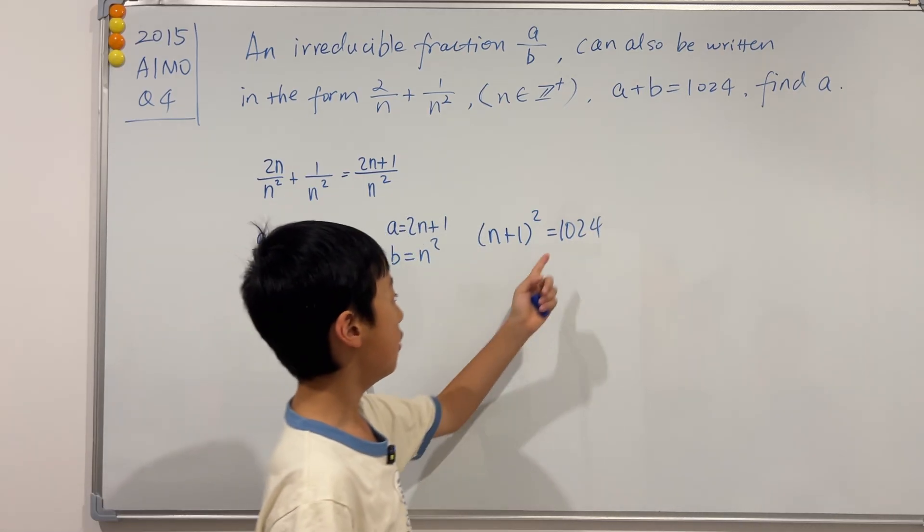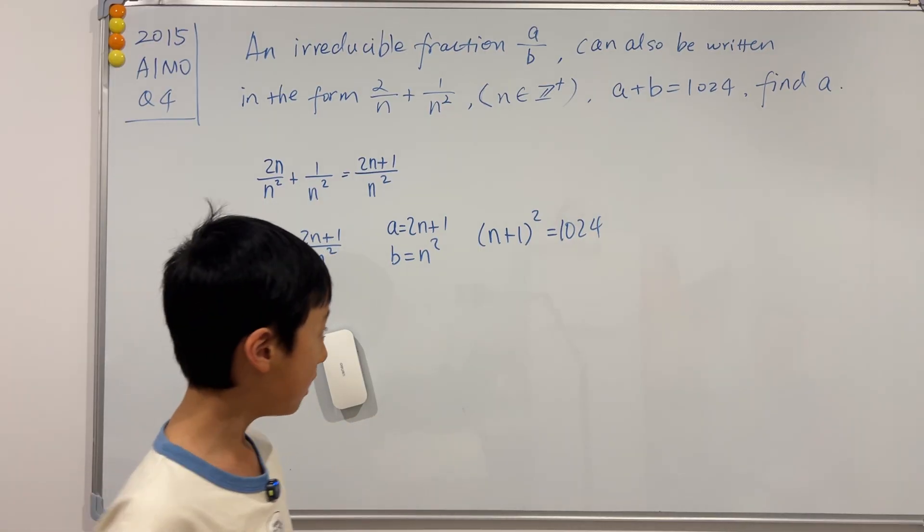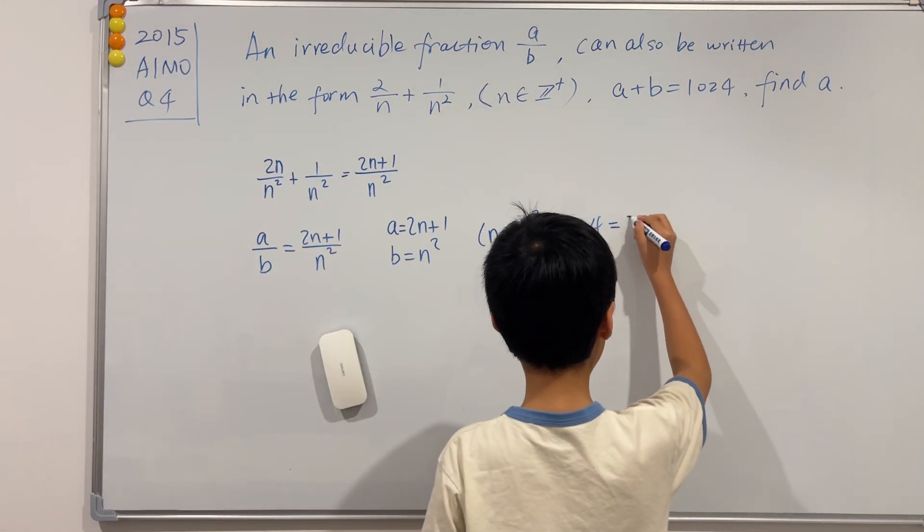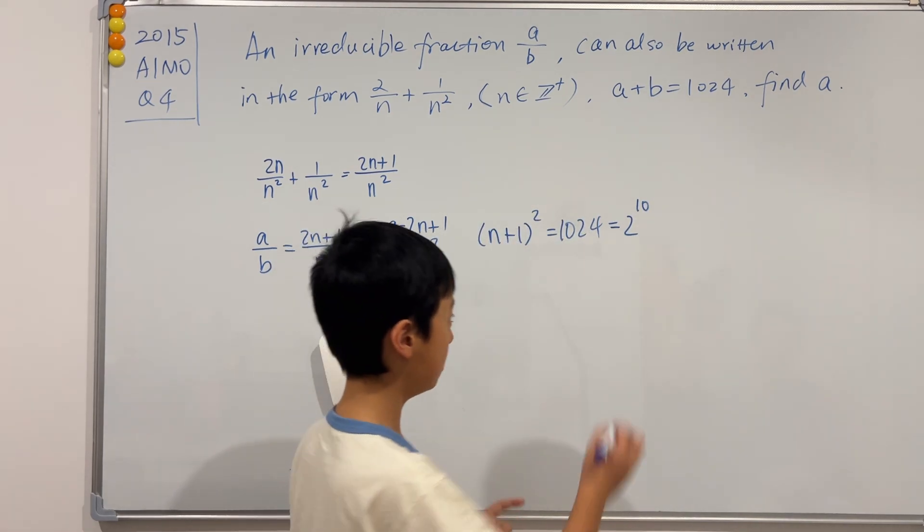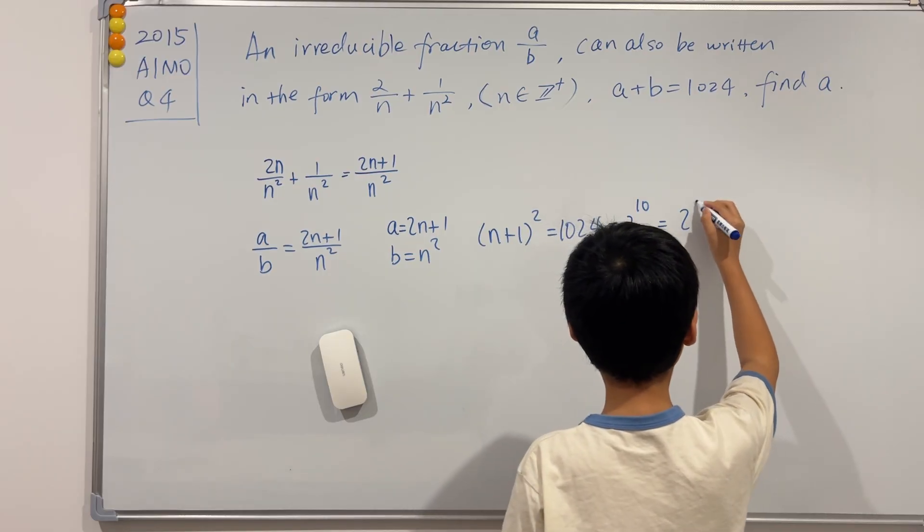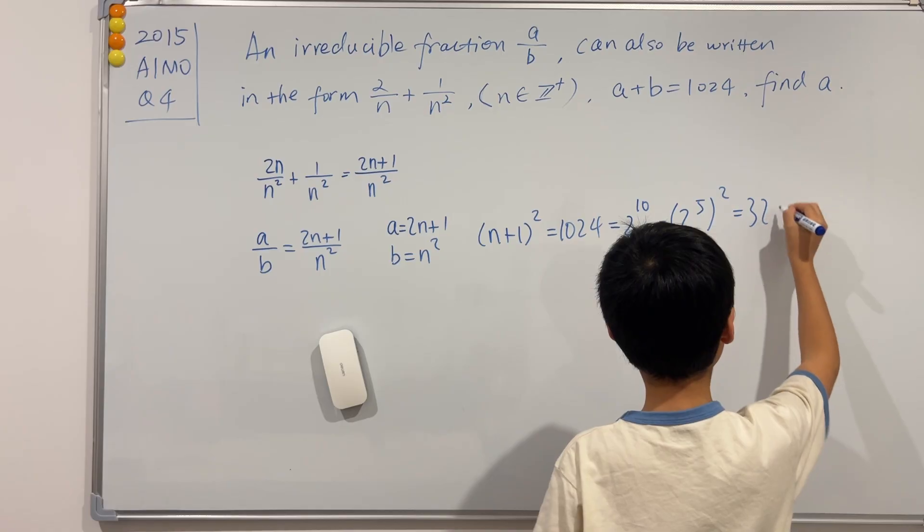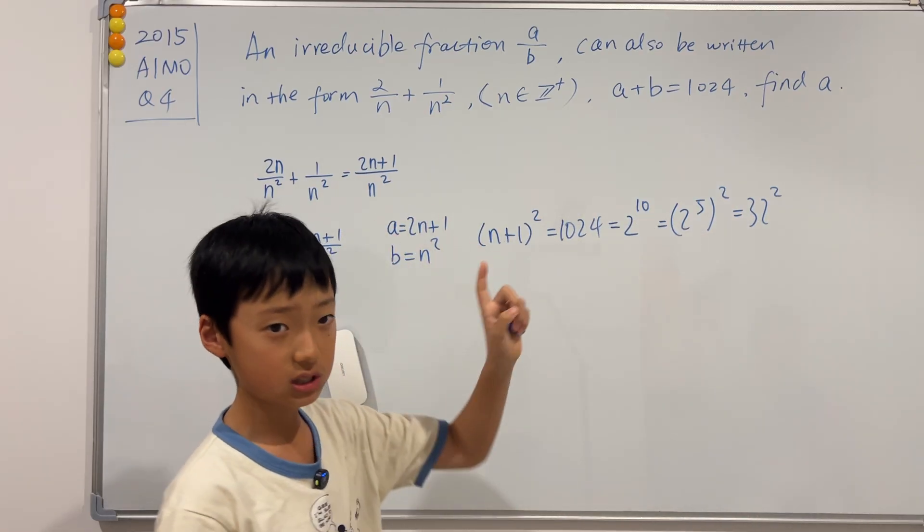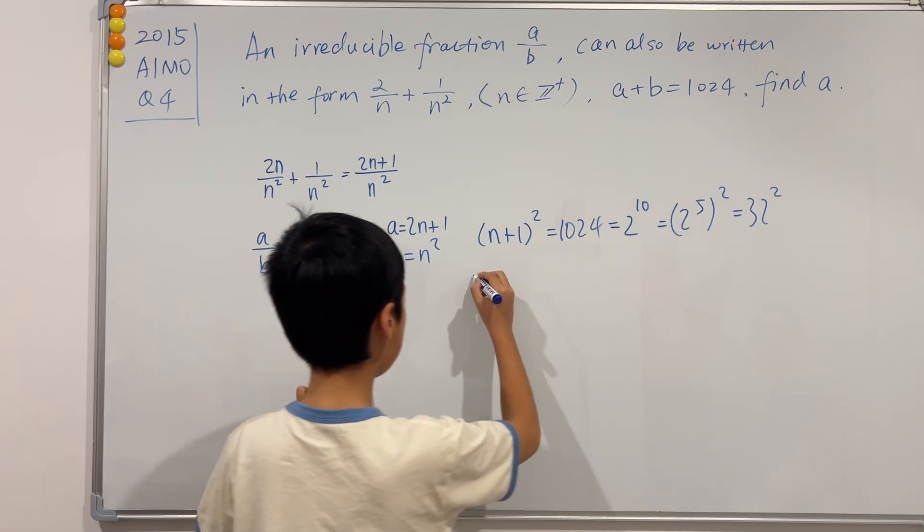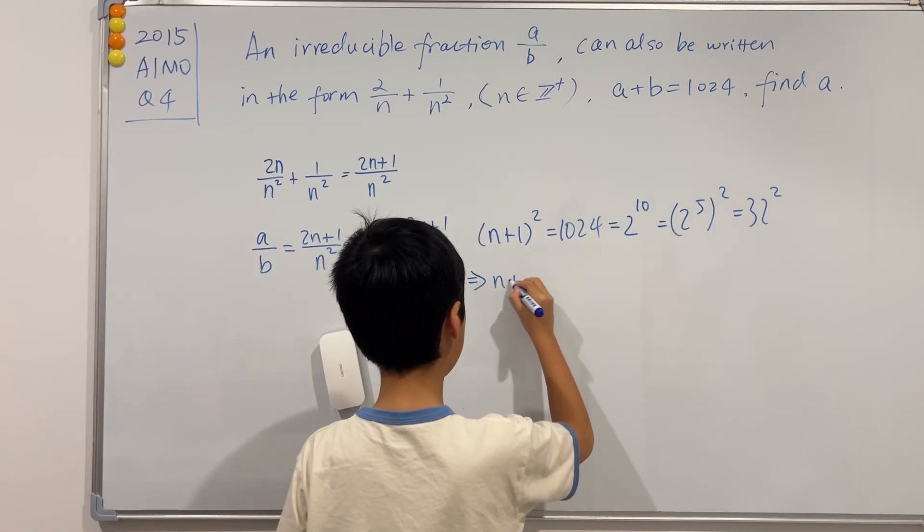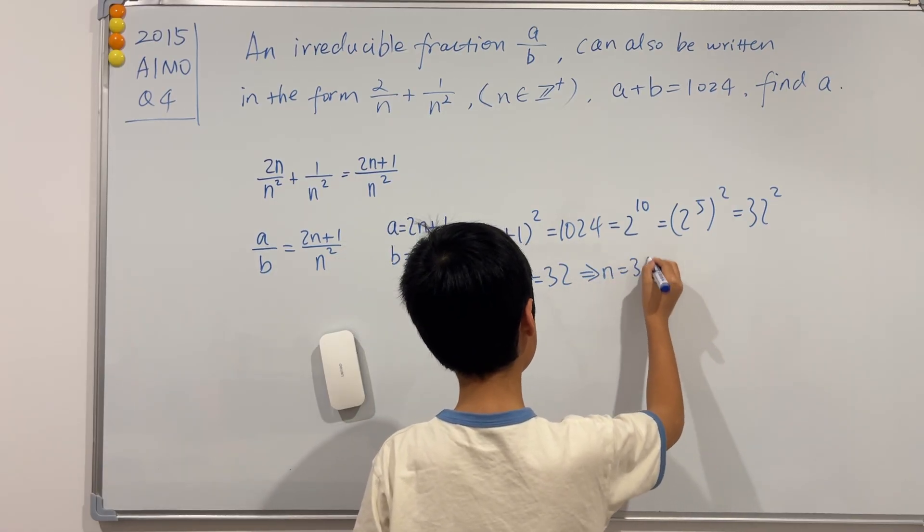If you try this on your own, 1024 is actually a really good number because it is exactly 2 to the 10th power. We can write 2 to the 10th power as 2 to the 5th power squared, so this is just 32 squared. Since N is a positive integer, we can take square root both sides. So we can see that N plus 1 is just 32, so N is 31.